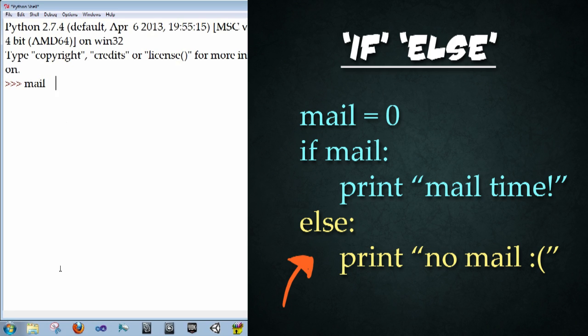We're going to type in mail equals zero enter. If mail, colon, print mail time in quotations. And then right here, we're going to type backspace to go back. And then we're going to type else, colon again, enter, print no mail, sad face. Enter, and enter one more time to execute this.